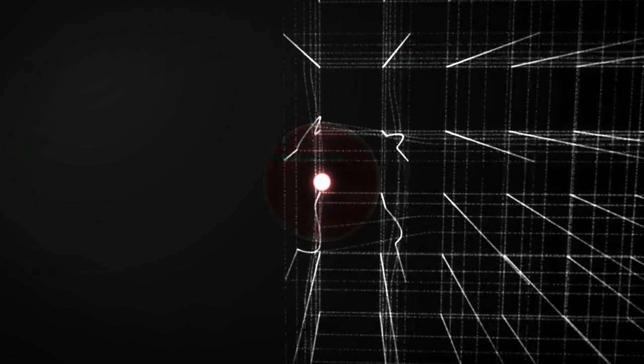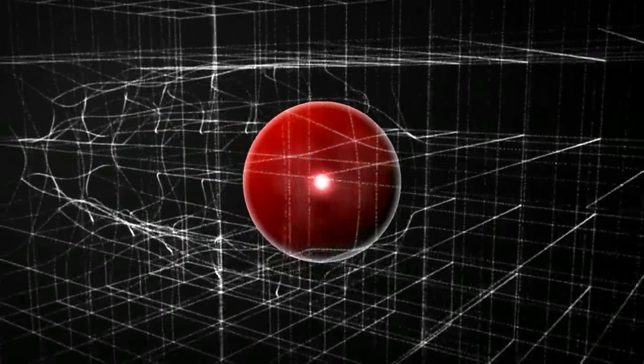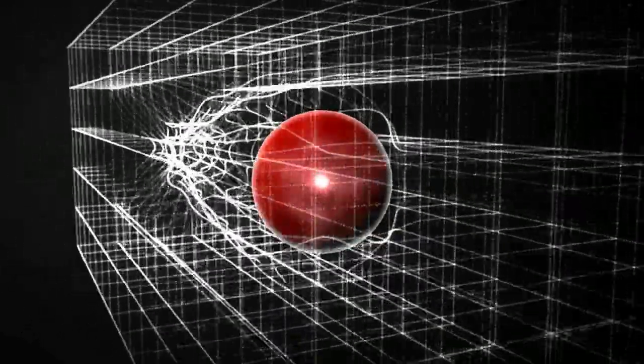A particle with mass, such as a quark, interacts with the Higgs field, which slows it down and converts some of its kinetic energy into what we know of as mass.